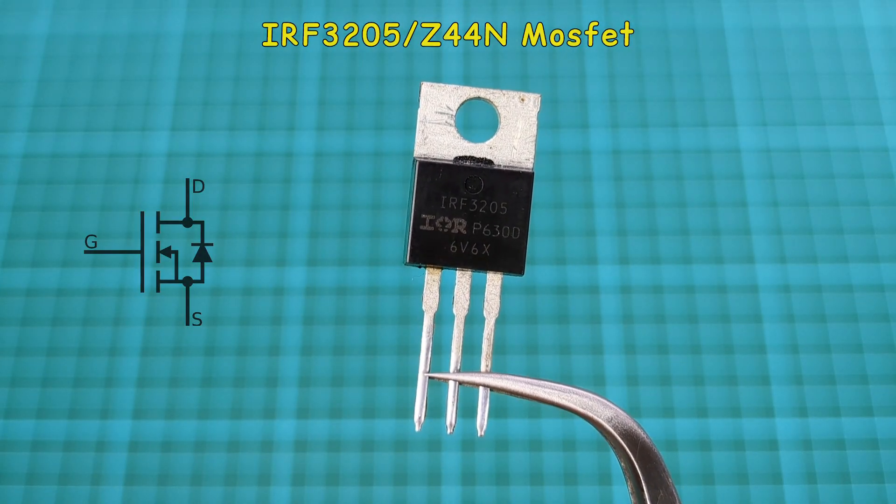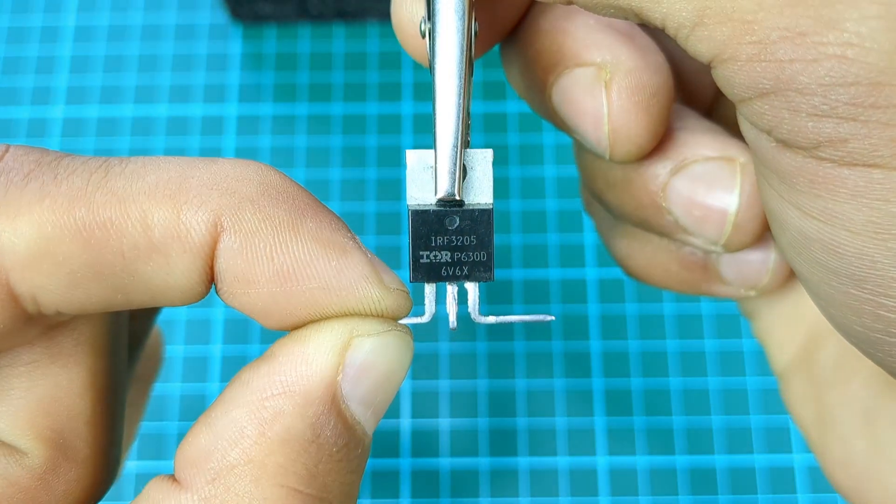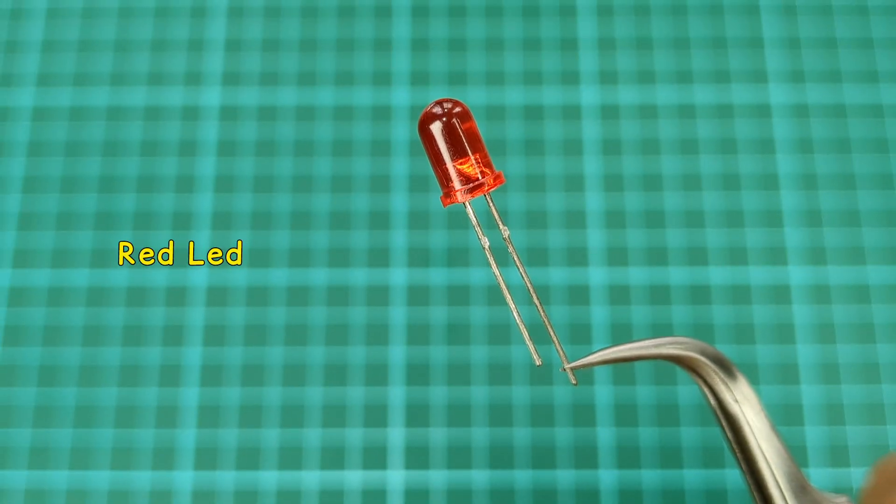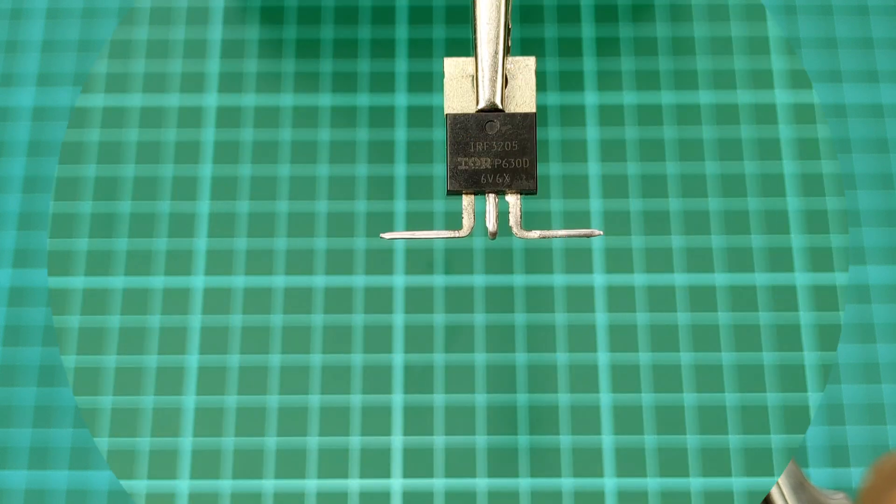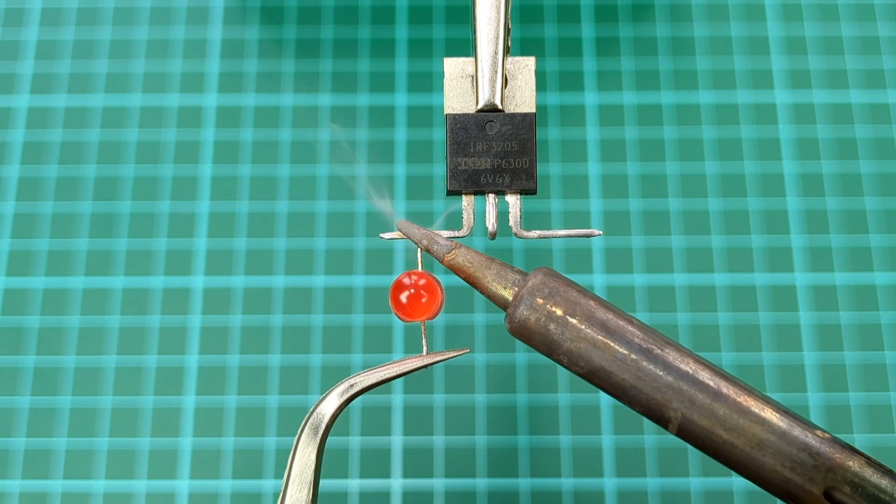Here I take IRF3205 MOSFET with three legs: gate, drain, and source. Take a five millimeter red LED and connect its positive leg to gate pin of the MOSFET.